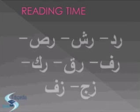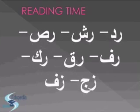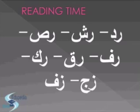Reading time. Here you have a few words formed of two letters — read them out, then you can check your pronunciation. Don't forget to start from the right side. The words are: redda, resha, resha. In the second line we have raffa, raqa, raqa. Then we have zejja and zeffa.